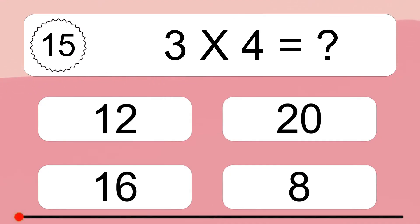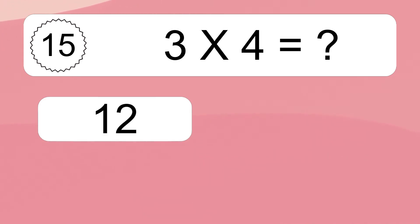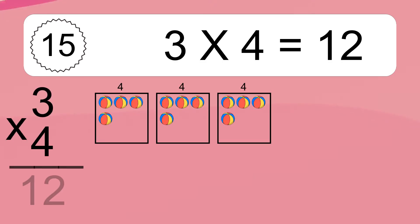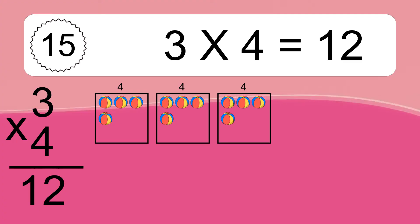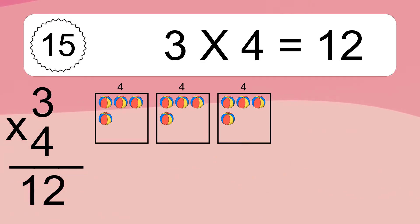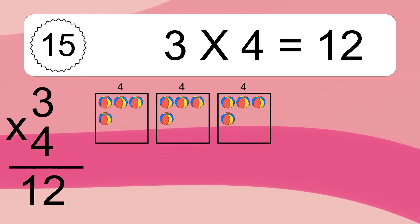6 times 4 equals what? We have 6 boxes, and each box has 4 colorful balls inside. If you count all the balls in all the boxes together, you will have 6 times 4 balls. This equals 12 balls.